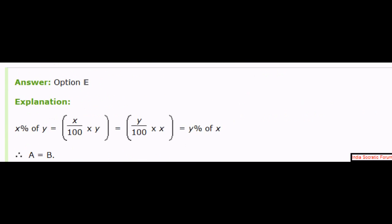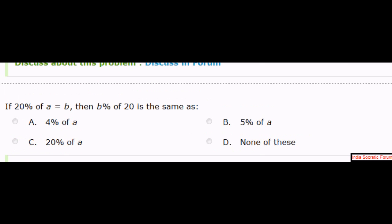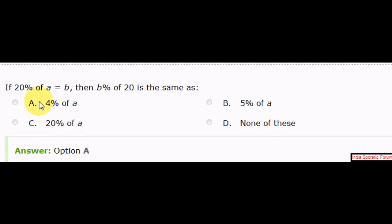Let's do one more sum. It's going to be a little different this time. 20% of A equals B. Then B percentage of 20 is the same as? Let's pause the video and try to find your answer. B percentage of 20. 20% of A is B. So B percentage of 20 is the same as? 4 percentage of A, 5 percentage of A, 20, none of these. The answer is option A, 4 percentage of A. You know why?